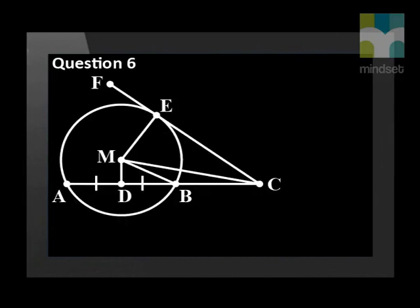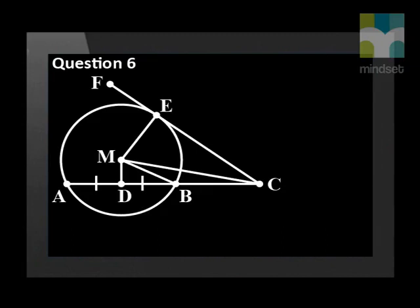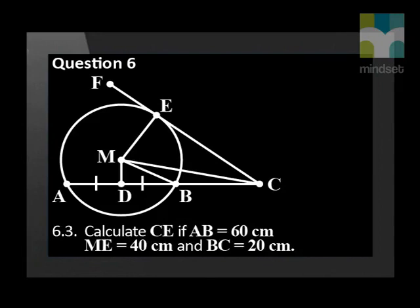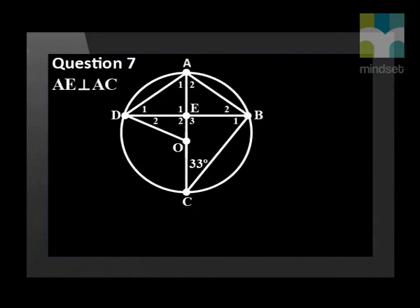In the diagram, M is the center of the circle. FEC is a tangent to the circle at E. D is the midpoint of AB. Prove that MDCE is a cyclic quadrilateral. Prove that MC squared is equal to MB squared plus DC squared minus DB squared. Calculate CE if AB is equal to 60 cm, ME is equal to 40 cm, and BC is equal to 20 cm.